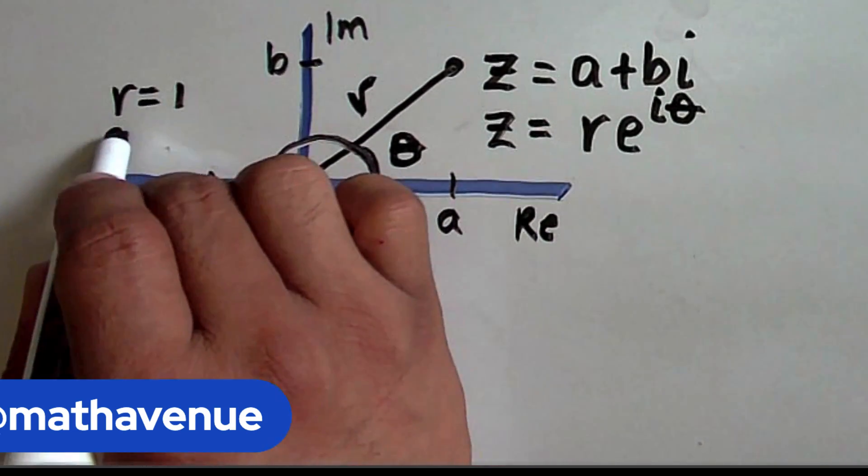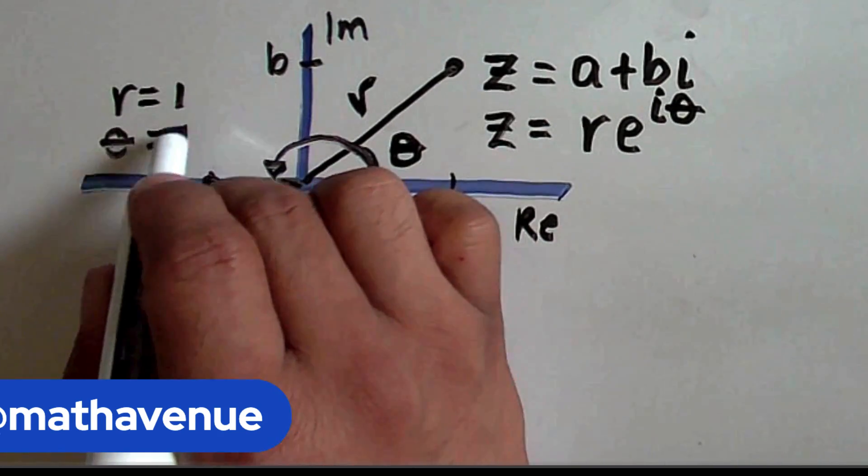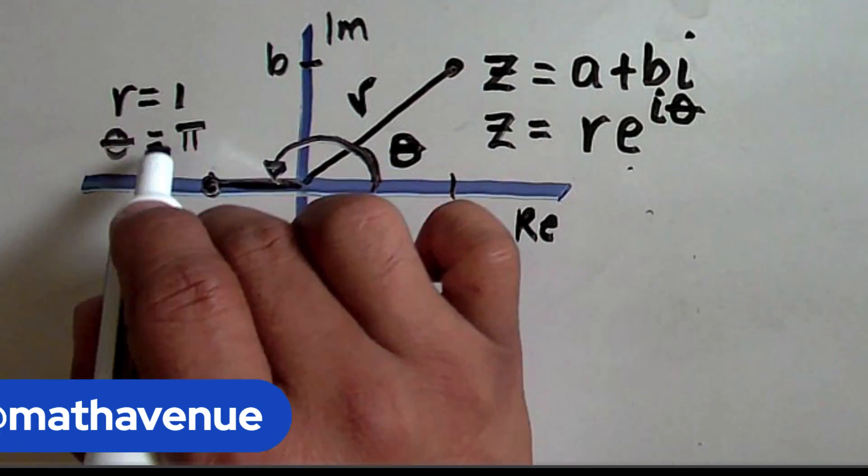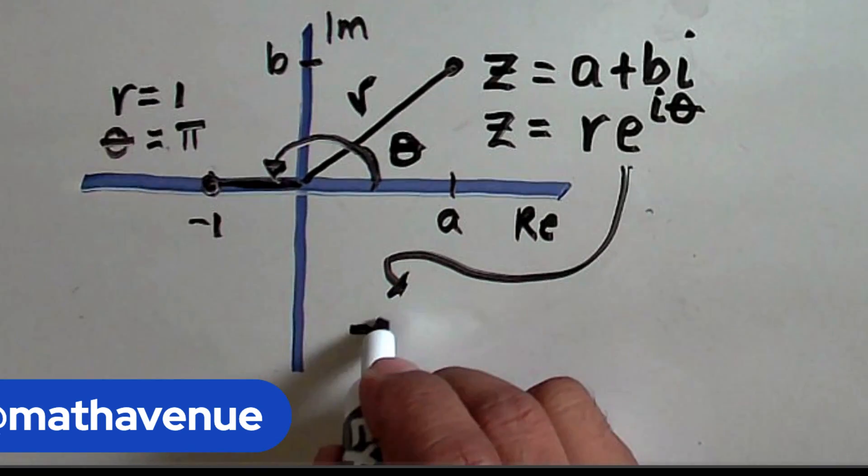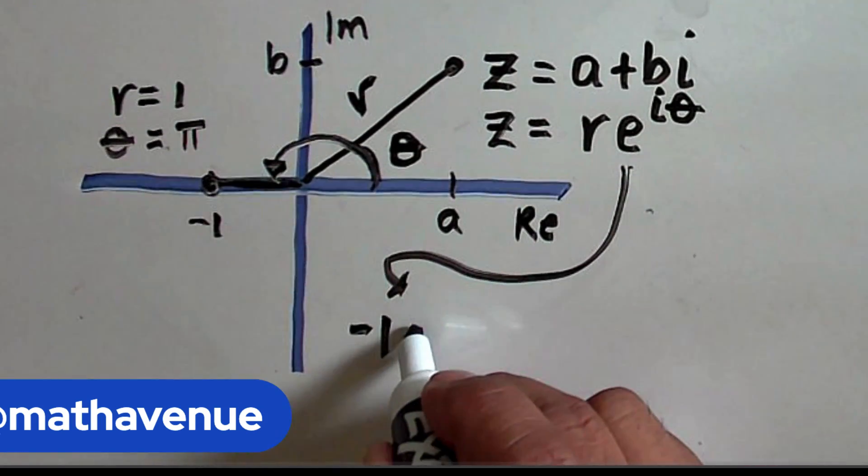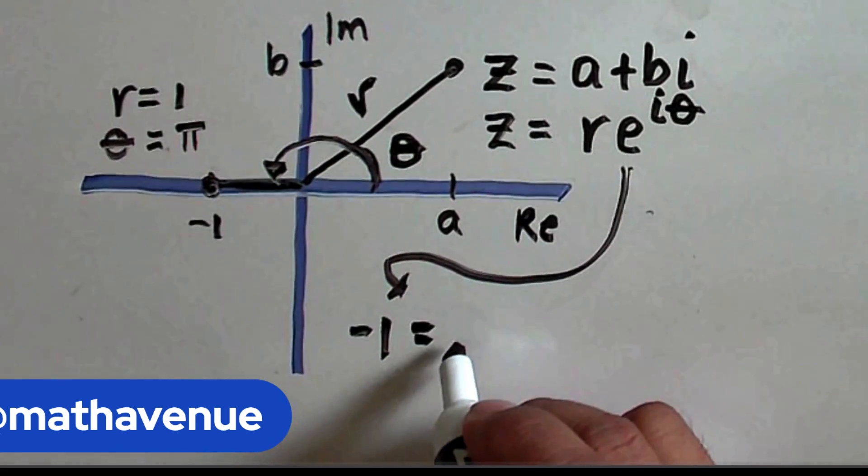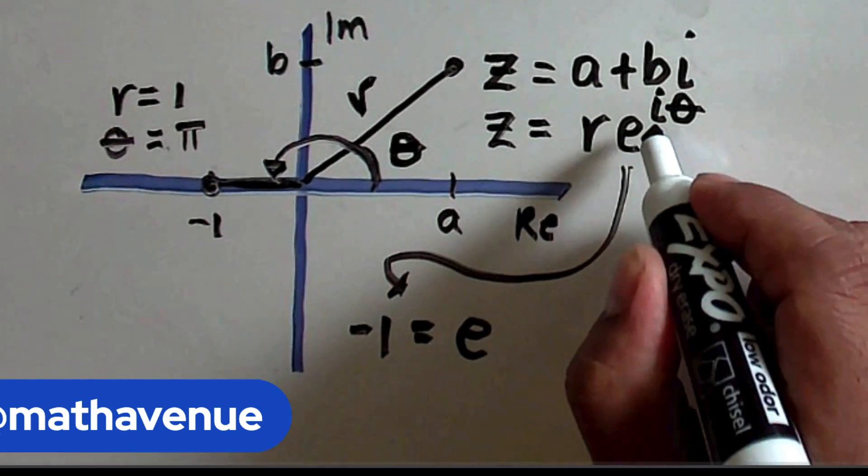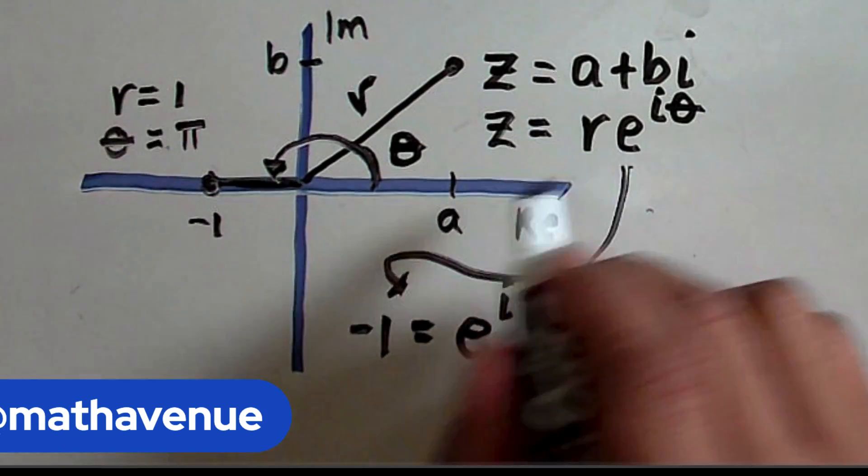So, therefore, the angle at this point is π. And substituting now these values to this polar equation, we now have negative 1, which is our z, equals r. Our r is 1. So, we have e^(iπ).